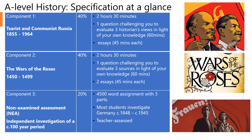A-level history is divided into three components. Component one is Russia. You will study Tsarist and Communist Russia between 1855 and 1964. You will study the reigns of Alexander II, Alexander III, and the last Tsar — Nicholas II. You will study the revolutions of 1917, which brought down Tsar Nicholas II and Tsarism absolutely, and which led to the Communists coming to power. You will then learn about how under Lenin, Stalin, and Khrushchev, Russia was transformed into a Communist society.